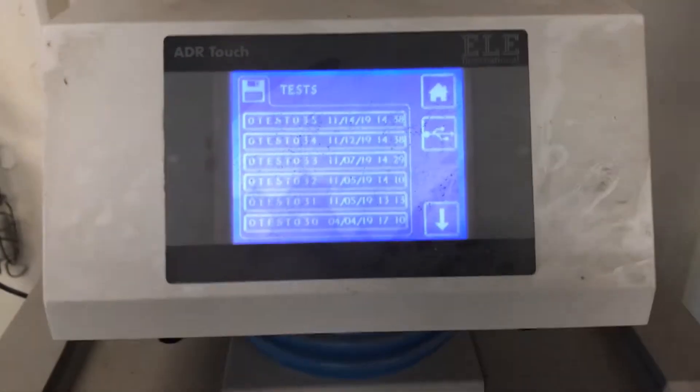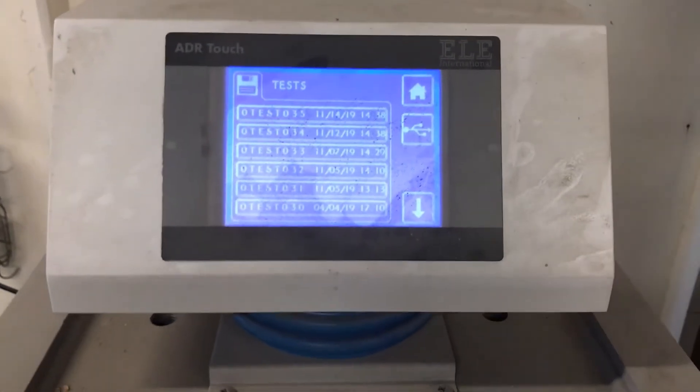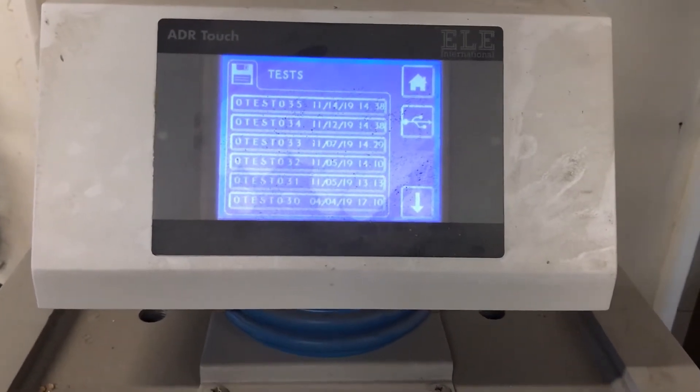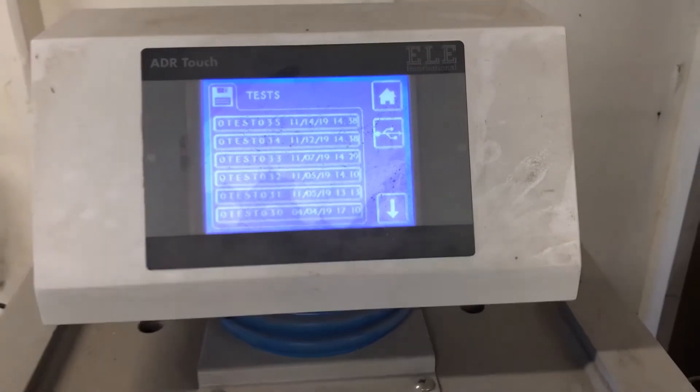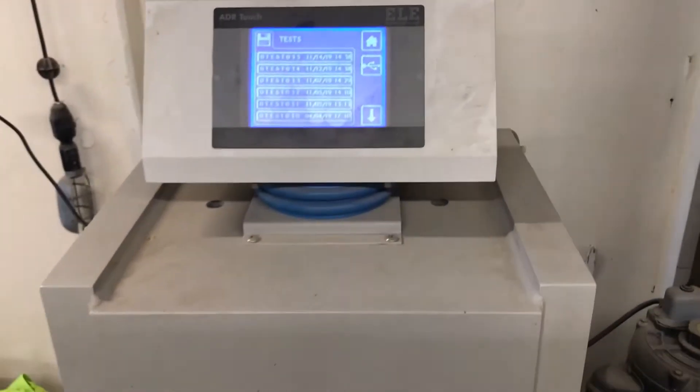So one of the advantages of using this machine is that it stores relevant data. The Tineus Olsen machine obviously does not do that.